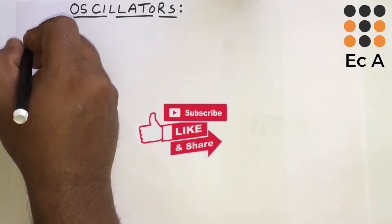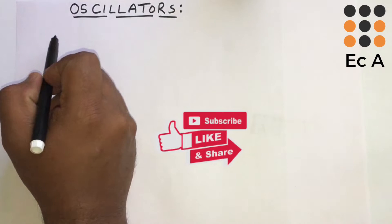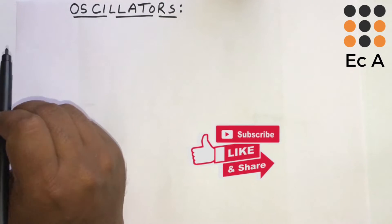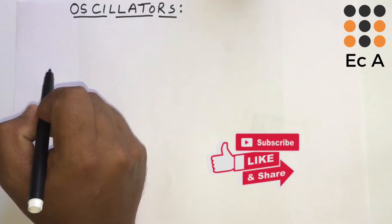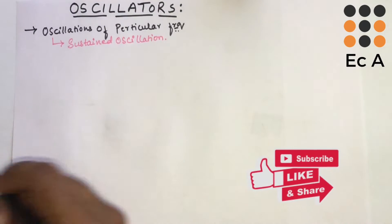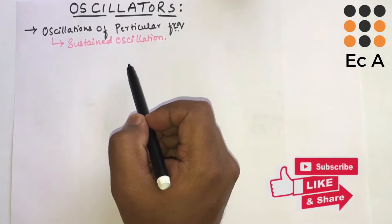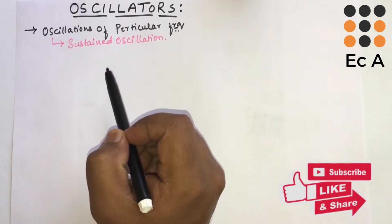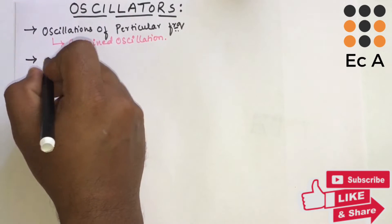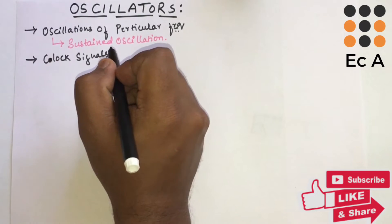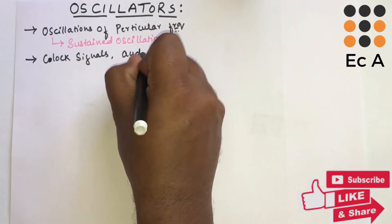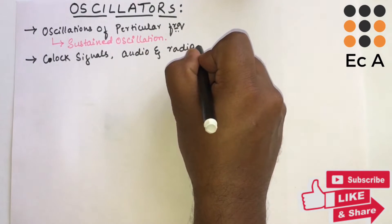An oscillator is a very important electronic device. It generates oscillations of a particular frequency, and these oscillations should be undamped oscillations, or sustained oscillations. The applications of an oscillator include generating clock signals for electronic circuits and use in audio and radio frequencies.